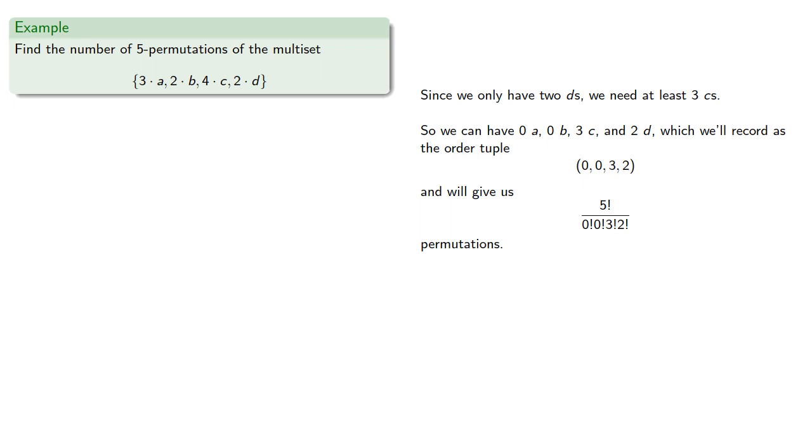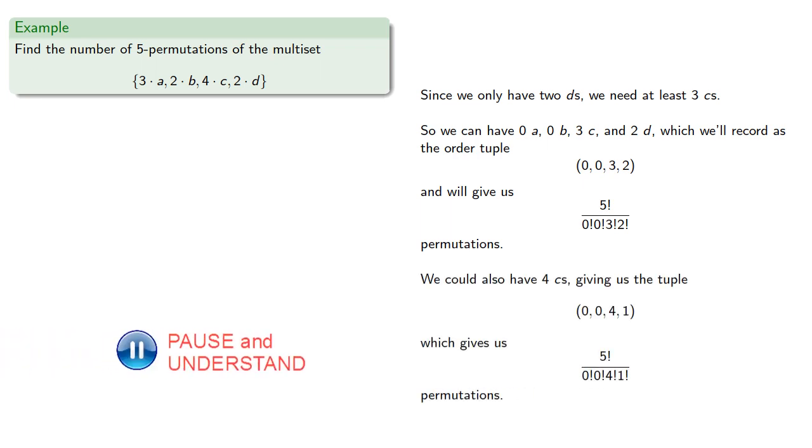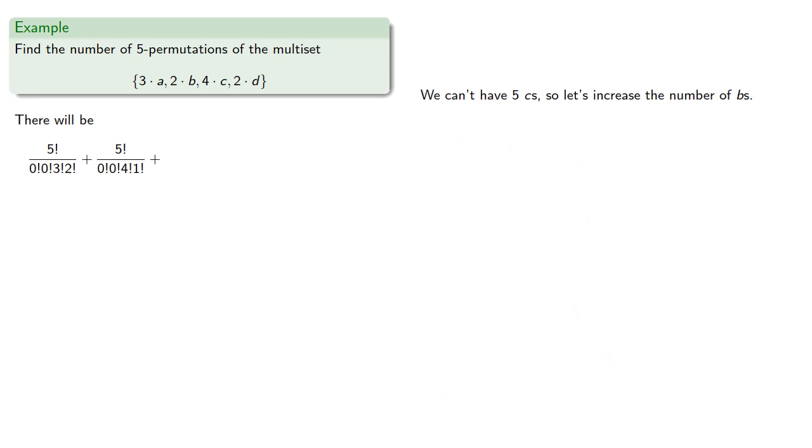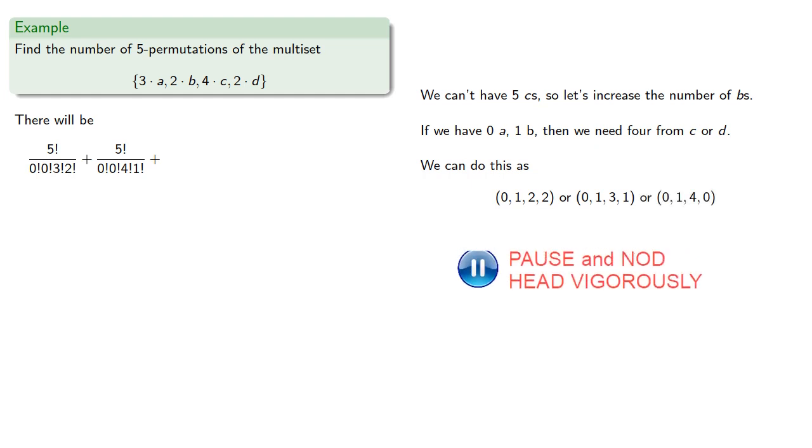We could also have 4 c's and a d, giving us a tuple. We can't have 5 c's, so now let's increase the number of b's. If we have 0 a, 1 b, then we need 4 more from c or d. And we can do this with 2 c's and 2 d's, 3 c's and a d, or 4 c's, which give us more permutations.